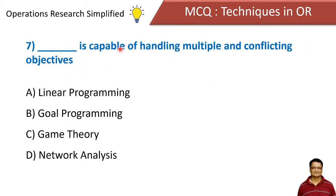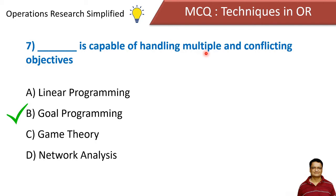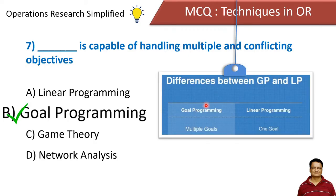Blank is capable of handling multiple and conflicting objectives. Options: linear programming, goal programming, game theory, and network analysis. Correct answer is goal programming. Goal programming is capable of handling multiple objectives — it can have multiple objective functions or even conflicting objective functions. The difference between goal programming and linear programming is that goal programming can have multiple goals while linear programming can have only one goal.